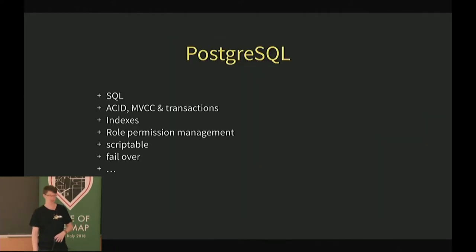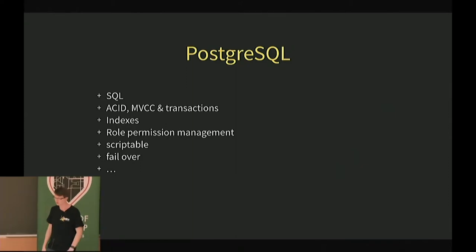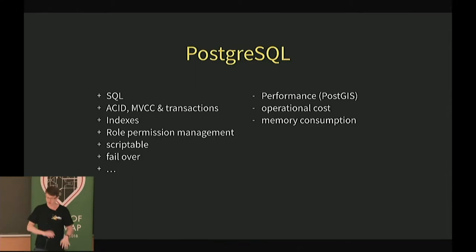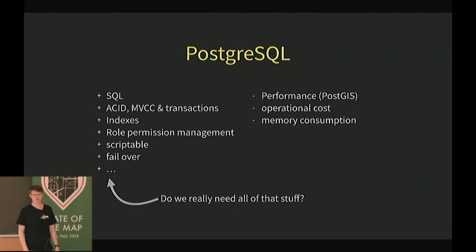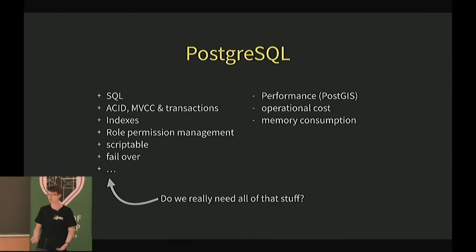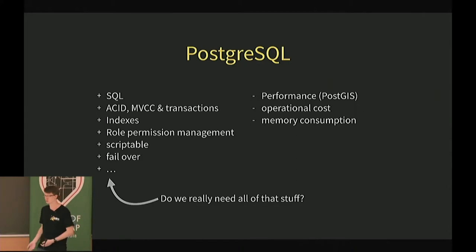Postgres is really awesome — it has tons of features: full SQL, ACID, MVCC transactions, indices, permission management, it's scriptable, you can configure failover. But this all comes at a cost: limited performance as I mentioned, operational cost to maintain the server, and pretty large memory consumption. The question we all have to ask ourselves is: do we really need all of that stuff just to render a map? If you have an enterprise GIS system managing hundreds of users, it might be very useful. But if you're just rendering the map, you probably don't need it.